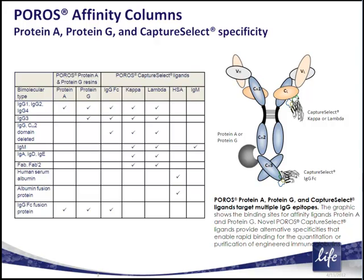In addition, the Capture Select Kappa and Lambda ligands both bind to the constant region of their respective light chains and bind all subclasses. In comparison, Protein L binds the VL domain of the Kappa light chain and exhibits strong affinity for four of the seven subclasses.